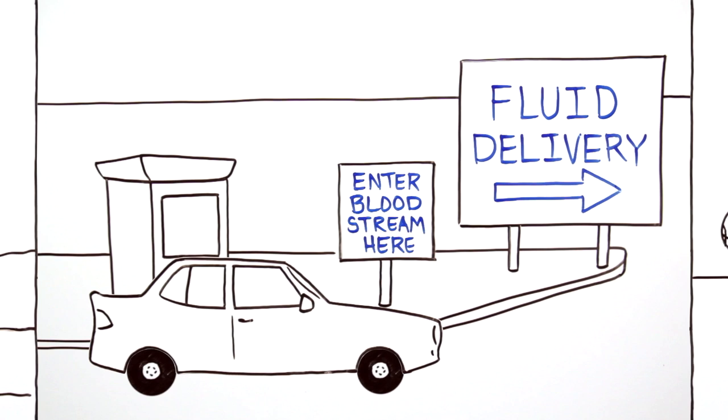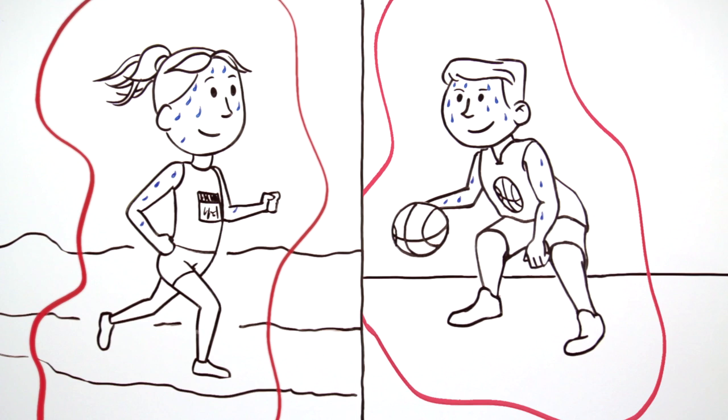The second phase of fluid replacement is fluid delivery. Rehydration is important because the body uses sweat, composed largely of water and salt, to keep its core temperature from overheating.